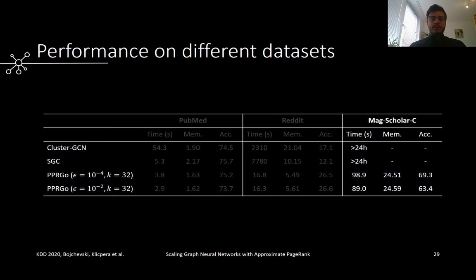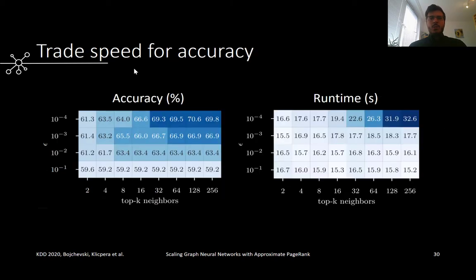All of this on a single machine. That is, we can train from scratch and obtain all predictions for all 12.4 million nodes in less than 2 minutes on a single machine. We also investigate the trade-off between speed and accuracy, which we can achieve by changing two key hyperparameters. Epsilon controls how good the approximation of the page rank vectors is, and K controls the number of neighbors we use. As expected, a lower Epsilon, which means better approximation, and a higher K, which means using more neighbors, leads to better accuracy, and at the same time increases the computational complexity. This allows us to select the trade-off we need for different applications. For example, there is a 10 percentage points increase in accuracy from the bottom left corner to the top right corner for a price of roughly doubled runtime.